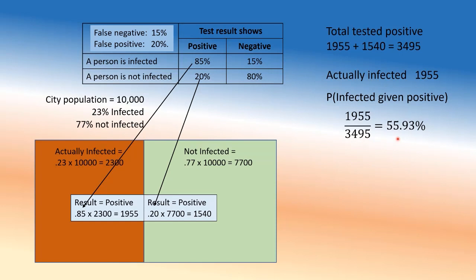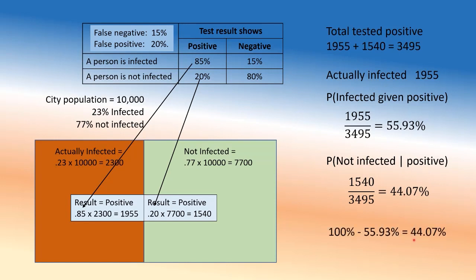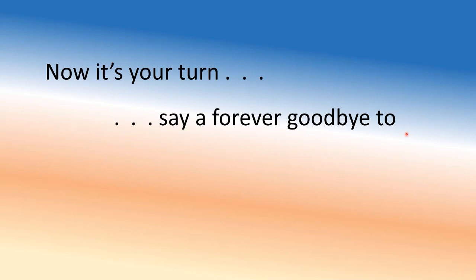Out of those 3,495 who test positive, only 1,955 are actually infected. So using Bayes' theorem, the probability of being infected given a positive test is 1,955 / 3,495, which is 56%. The reverse — not infected given positive — is 44%, which is 100 minus 56%. The prior probability was 23%, but if you test positive, the revised probability is 56%.